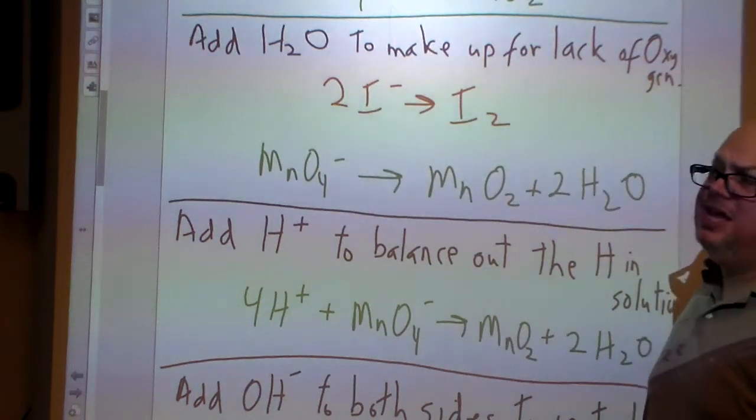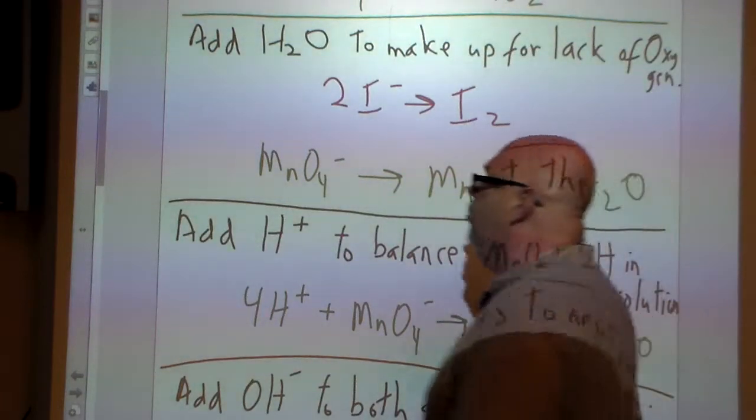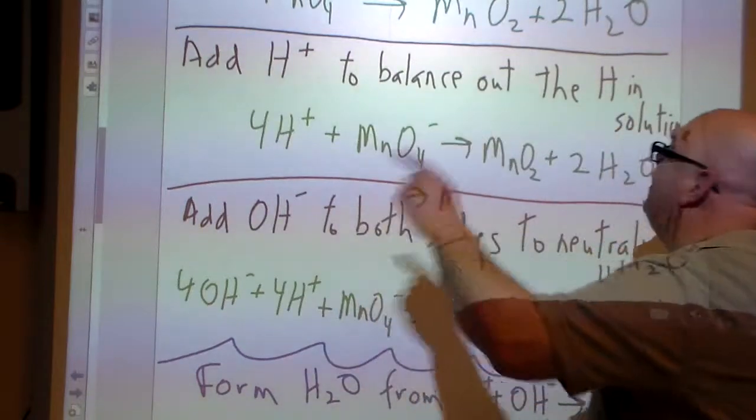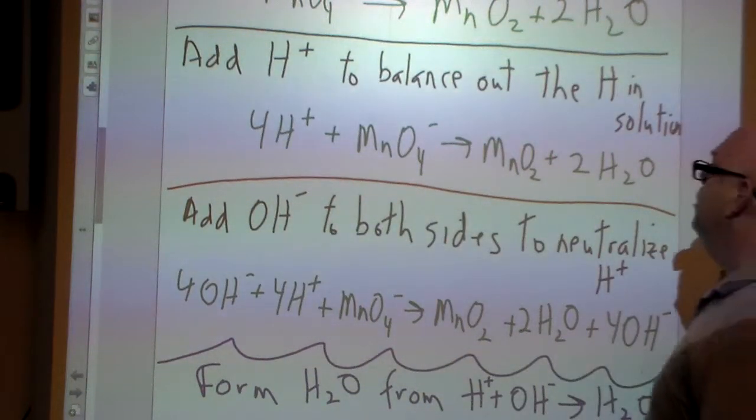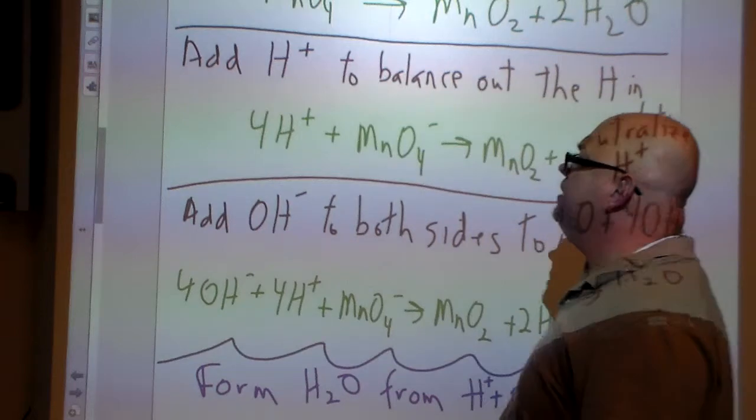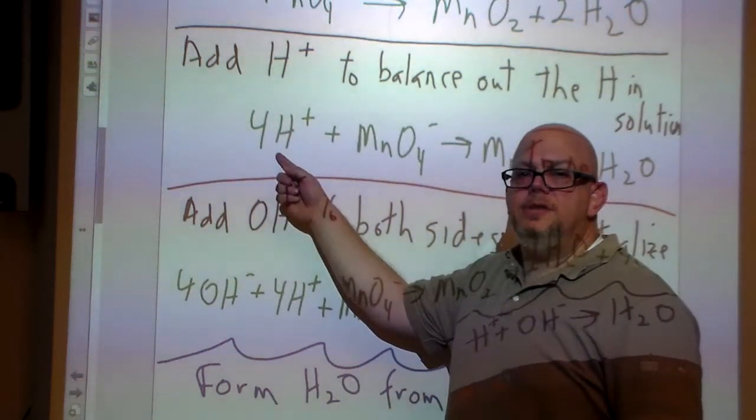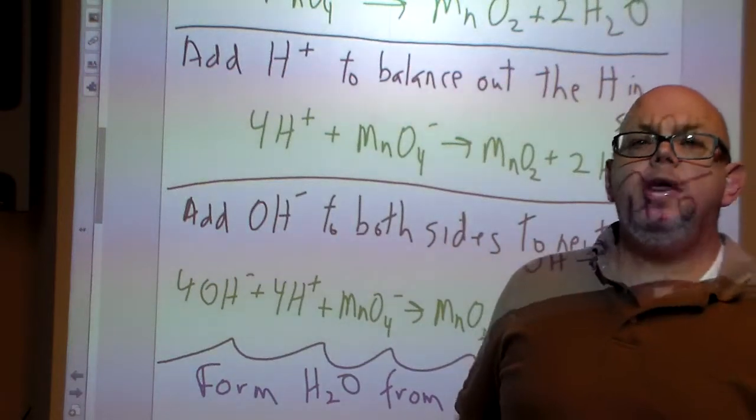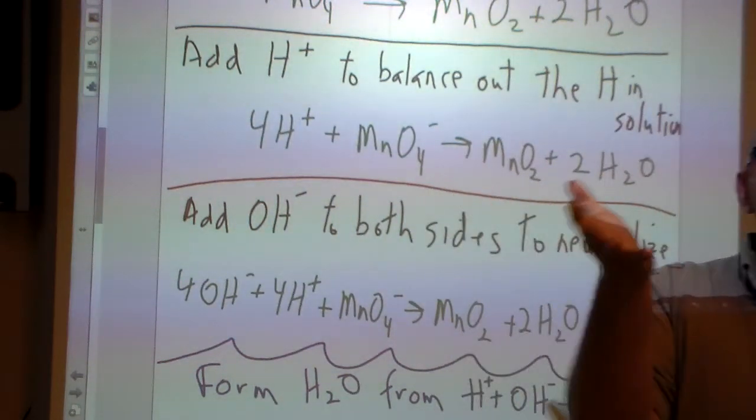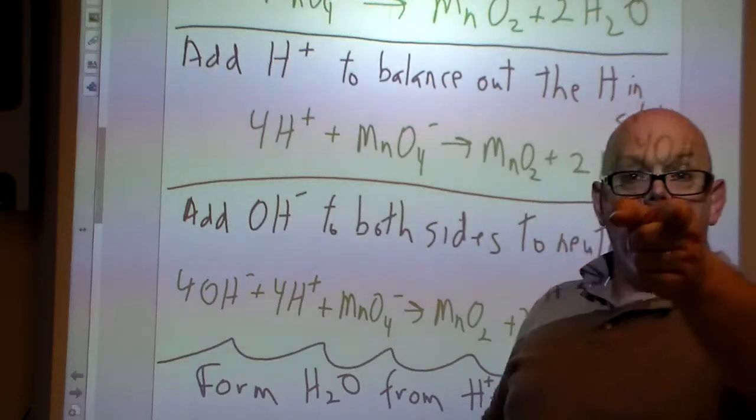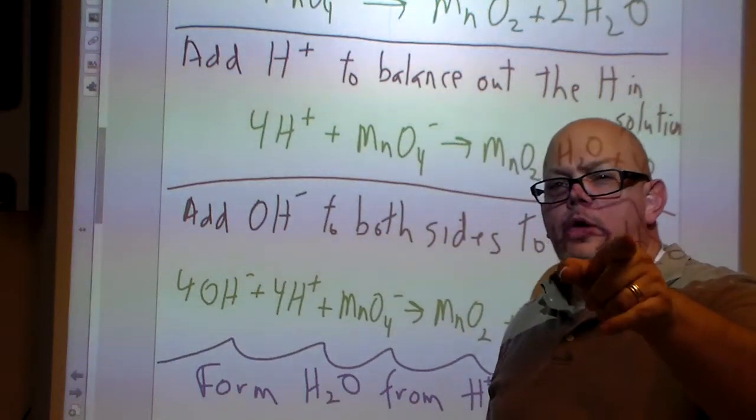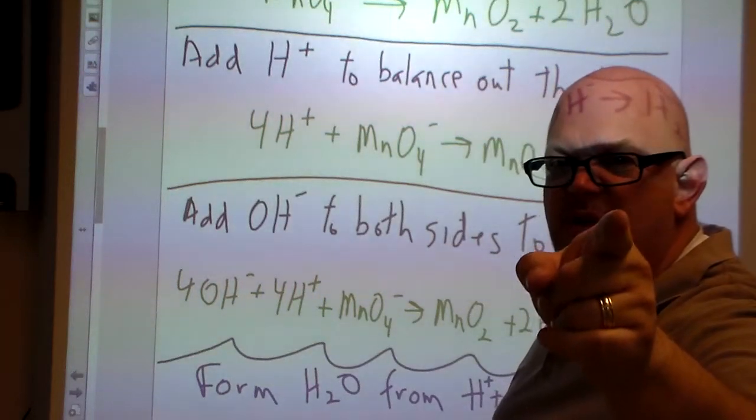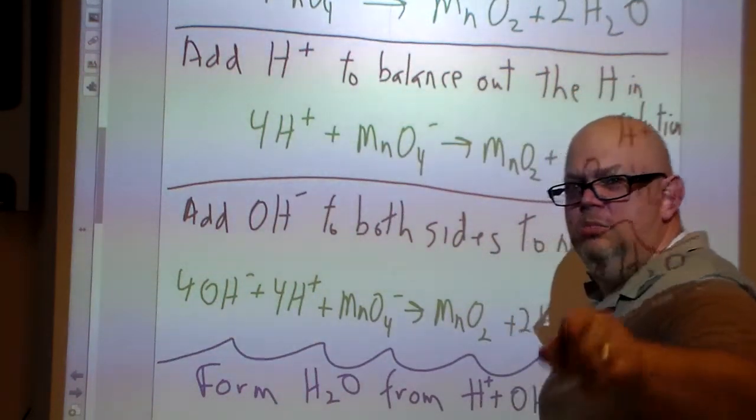You've got four hydrogen atoms, two times two. Relax, we are going to take care of the problem because our next step is we've added the water. Now we're going to add the hydrogen to balance out the hydrogens in the solution. So we have four hydrogens on this side of the arrow, we're going to add four hydrogen atoms on this side of the arrow.